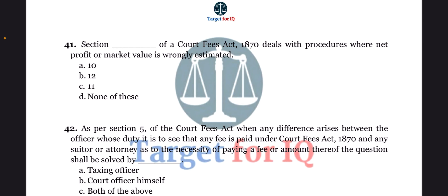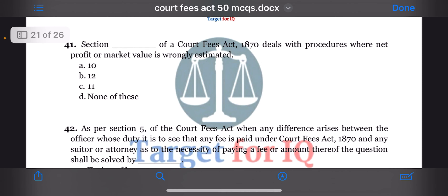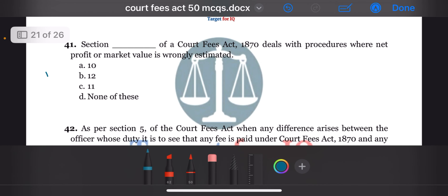Next question: section dash of this act deals with procedures where net profit or market value is wrongly estimated. The options are A. 10, B. 12, C. 11, or D. None of these. The correct answer is option A. 10.